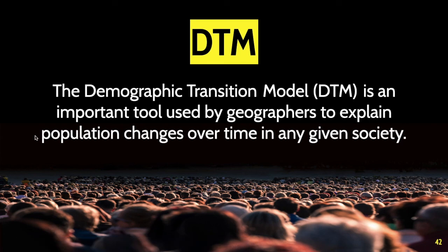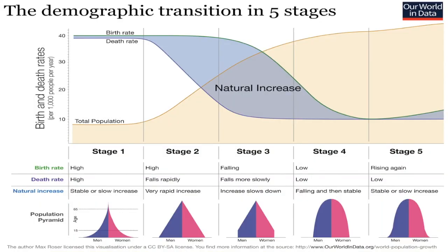Based on the population's composition and based on its population pyramid, which we worked with last week, we can say something about the development of that country, or at least make an educated guess as to how developed that country is. So this is what it looks like — this is our demographic transition model.